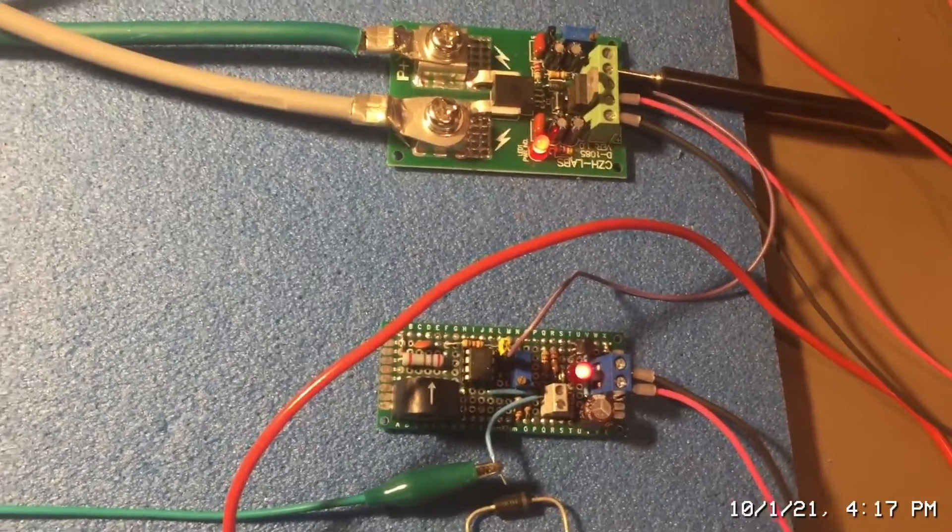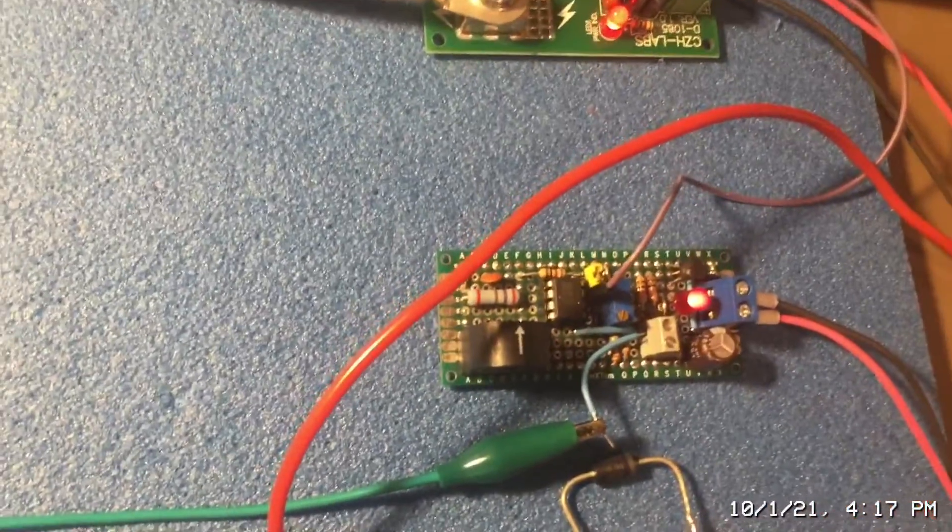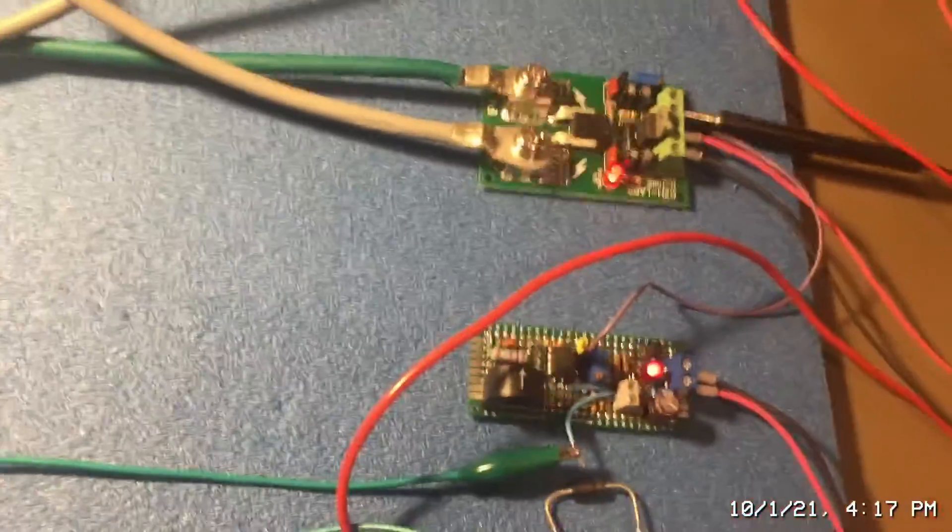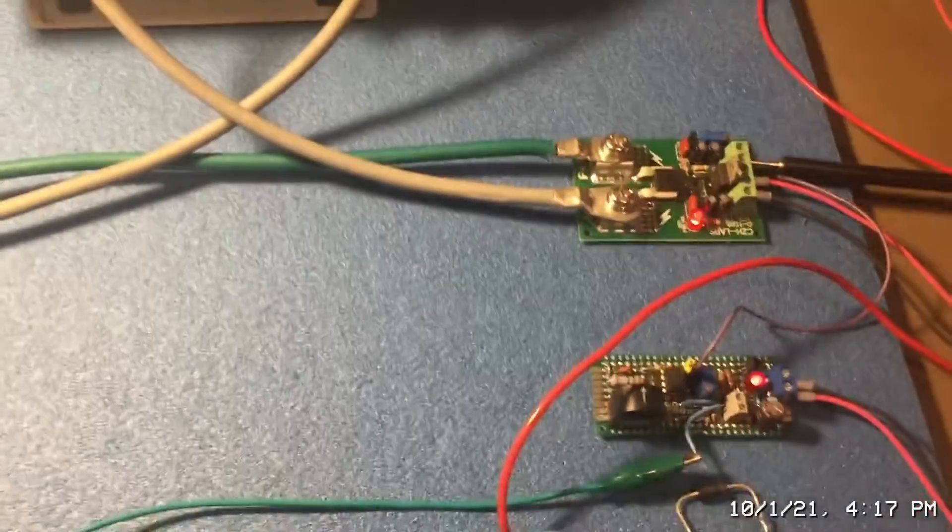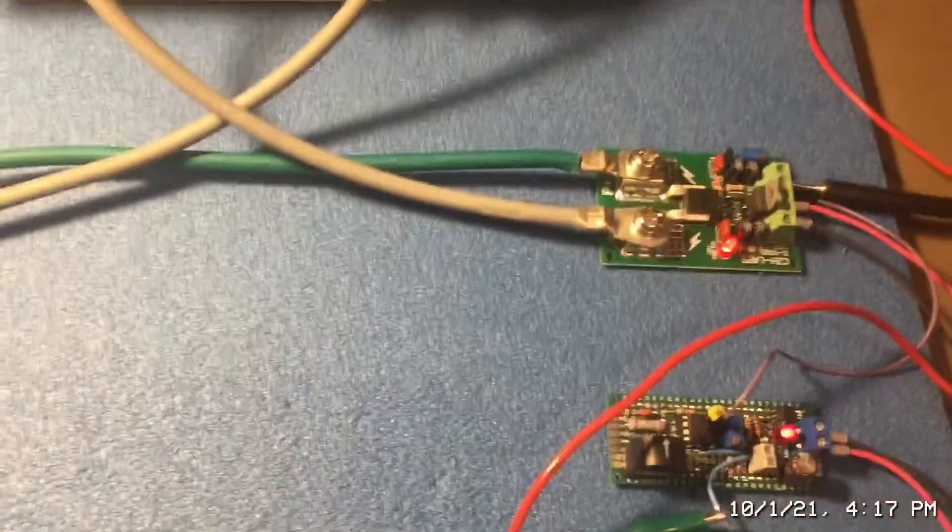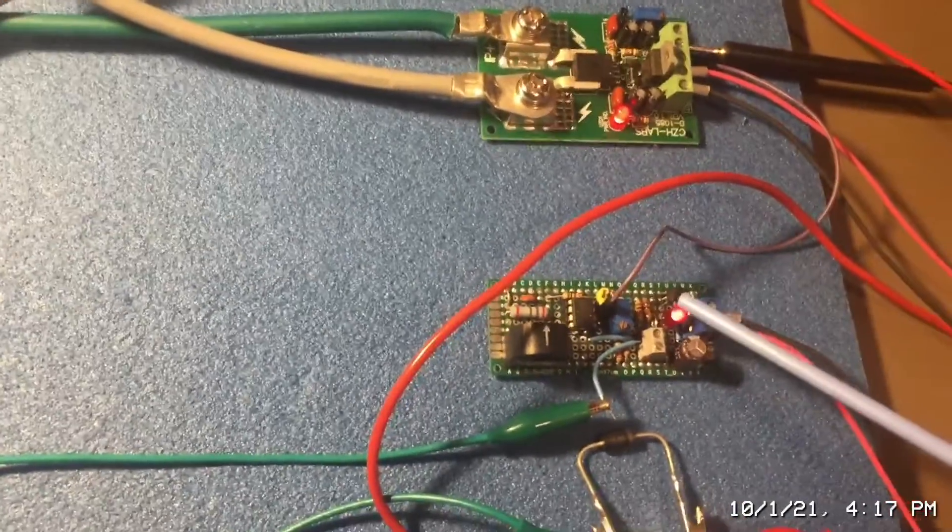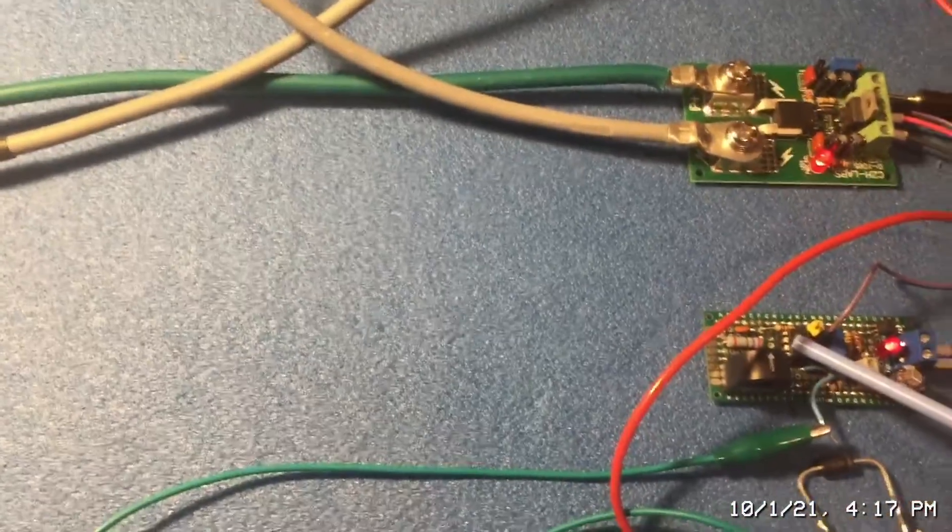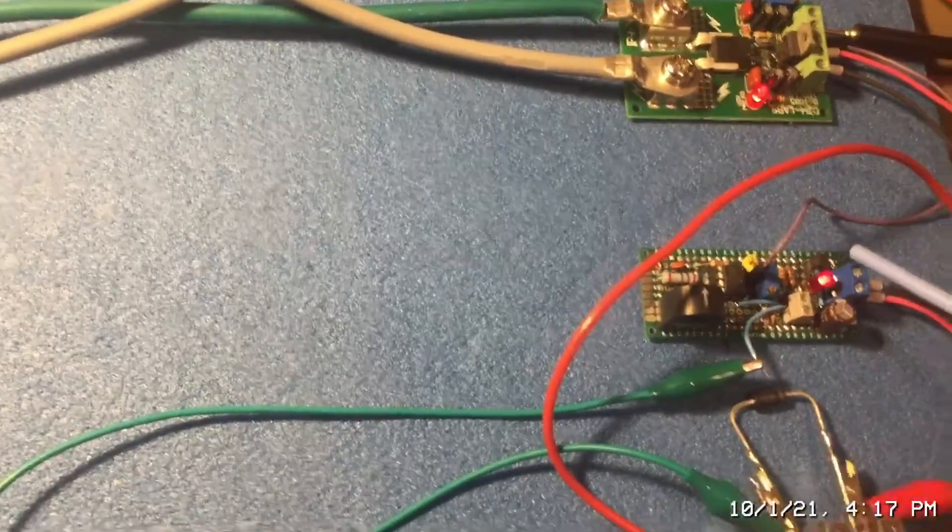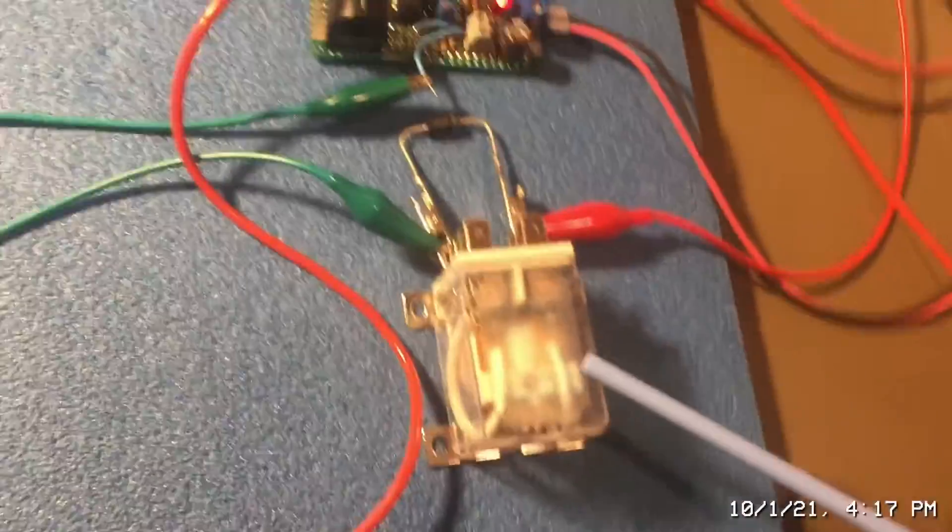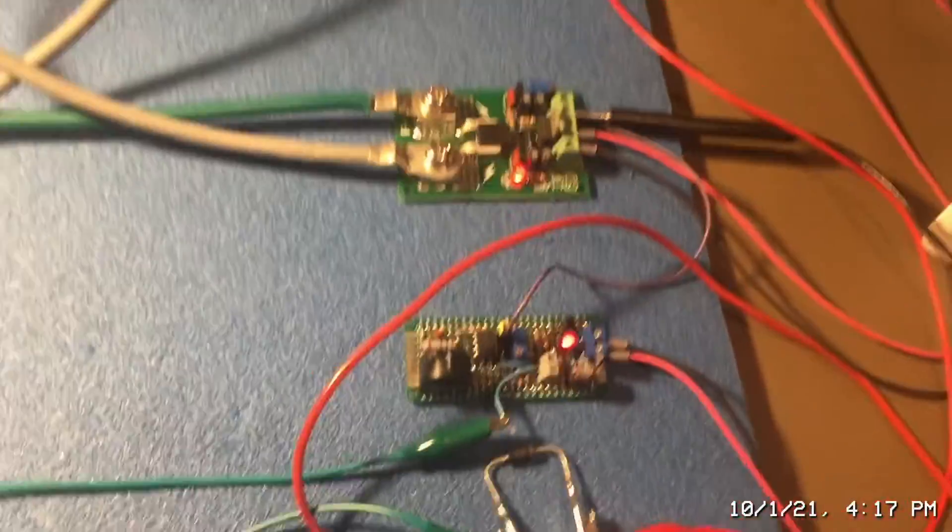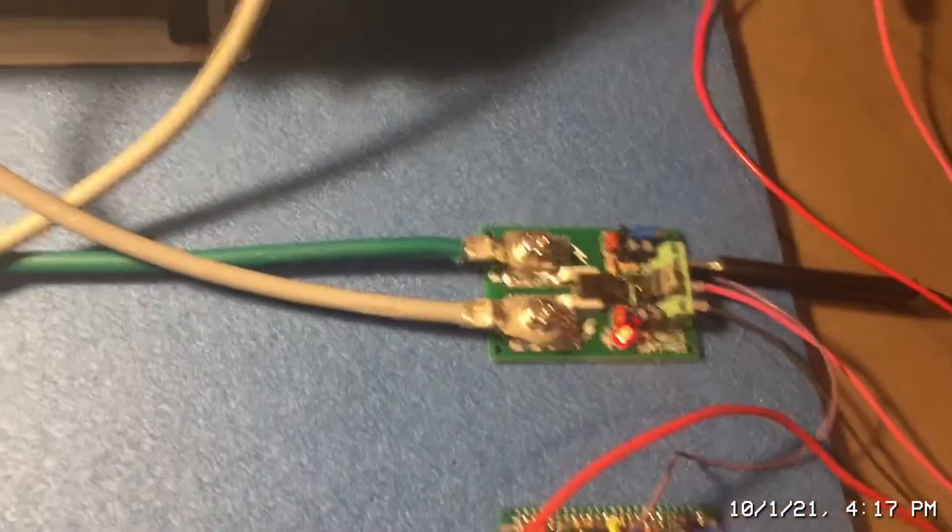Okay so that's the demonstration it's pretty straightforward we're using the current module to sense the current we take the analog output signal use that as an input signal to our comparator and then the comparator triggers an SCR and the SCR in turn triggers the protection device which in this case is a relay so I hope you found that helpful I'm going to go ahead and put the url for the module in the description of the video.